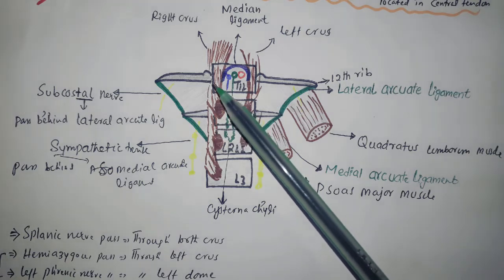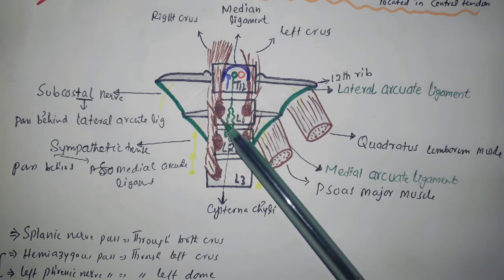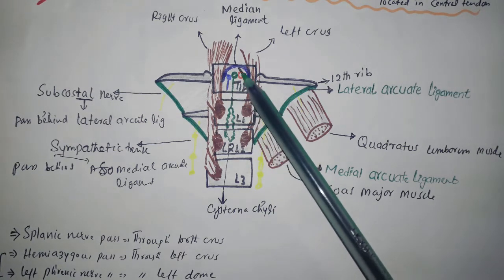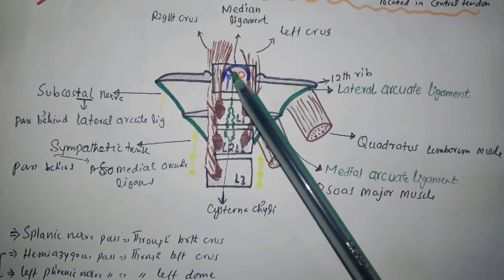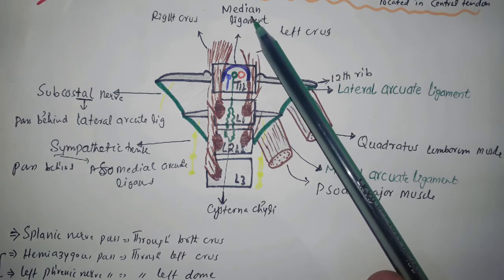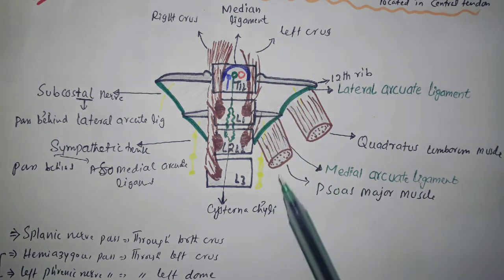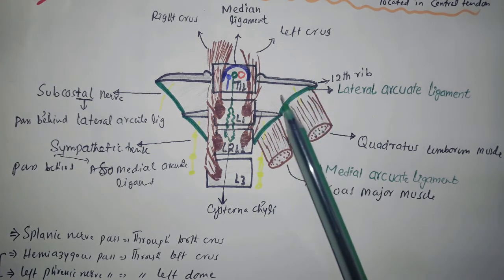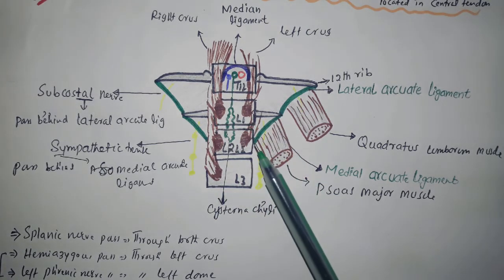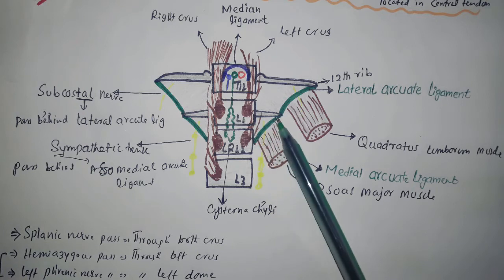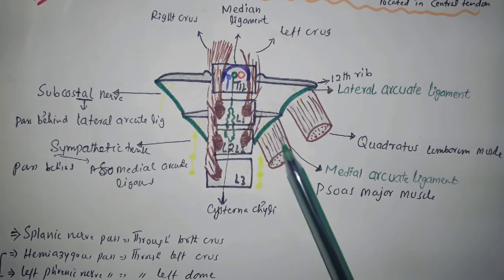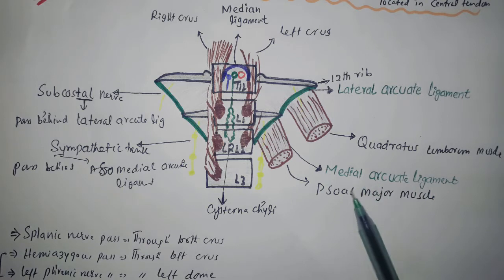The diaphragm consists of two crura: the right crus arises from L1, L2, and L3; the left crus arises from L1 and L2. The ligament attaching the right crus to the left crus is the median arcuate ligament. From the body of L2 to the transverse process of L1, the fascia condenses to form the medial arcuate ligament.